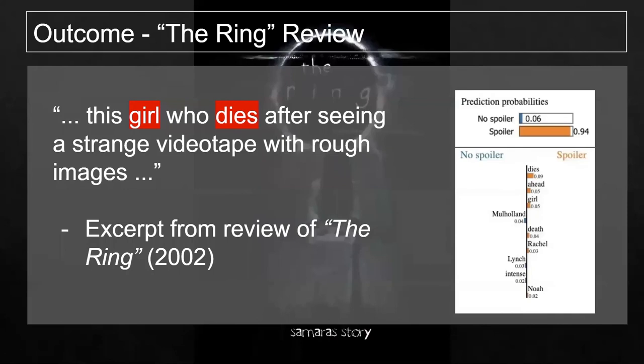Here we have our model in action. It turns out our example review of The Ring is a spoiler. In this movie, Katie watched the cursed videotape and dies a week later. Our model correctly predicts this by attributing a positive score for the words 'goes' and 'dies'.